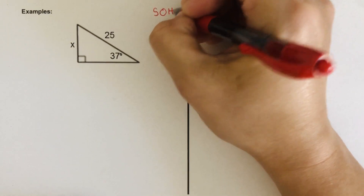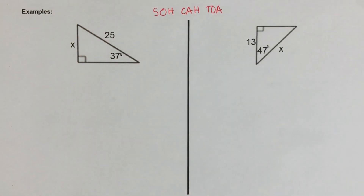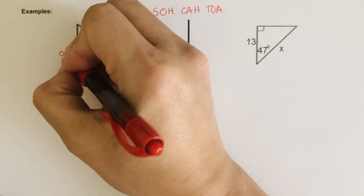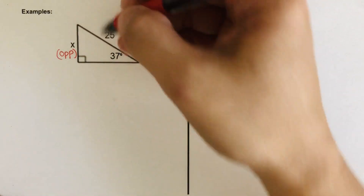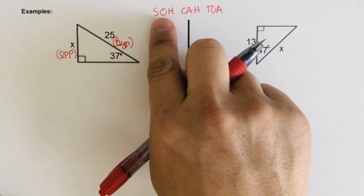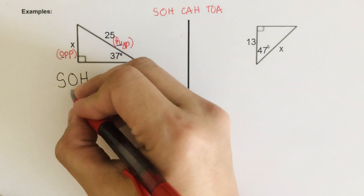We use the acronym SOH, CAH, and TOA. Which one to use depends on whatever's given in the triangle. Labeling the sides is very important so we can solve for the missing side. In this problem, we have 37 degrees, and across from it is X, so we label X as opposite. The side of length 25 is the hypotenuse. So we have opposite and hypotenuse — we are going to use SOH.